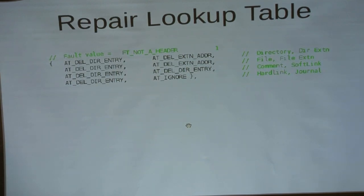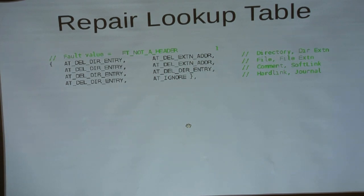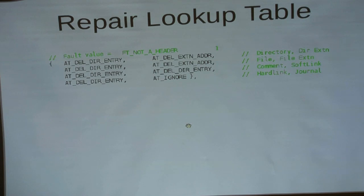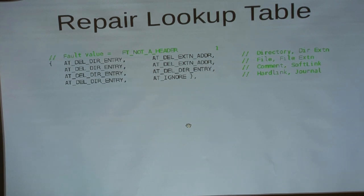Here is an example of the lookup table in the repair part of the program. If the header of a file or something else is not formed properly — it might have an invalid date or a wrong checksum — these are the actions NGF Check would take for different sorts of objects. For instance, if it's a subdirectory it will just delete it; if it's a file, comment, or hard link, same thing; if it's a directory extension, you can delete that extension. A lot of these actions are pretty drastic.